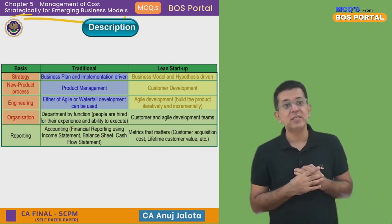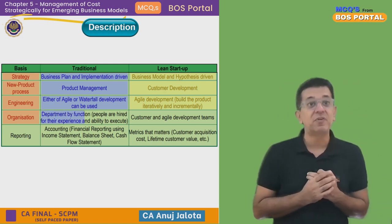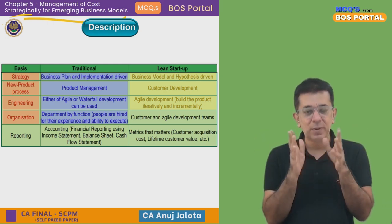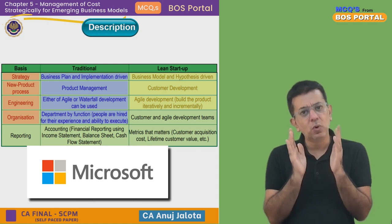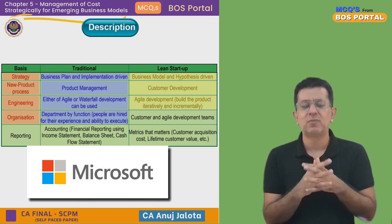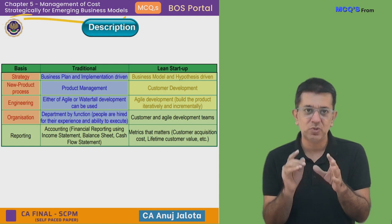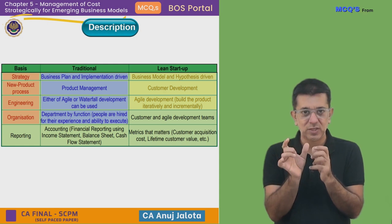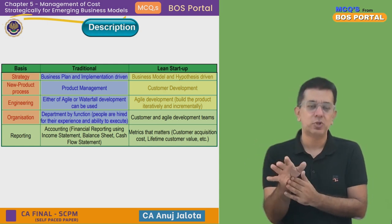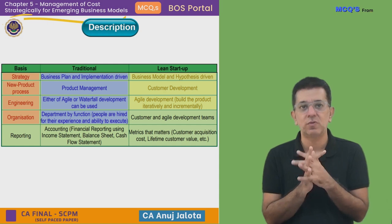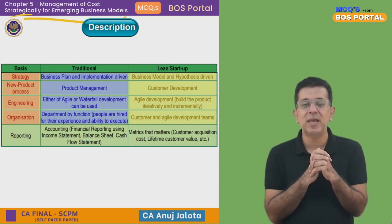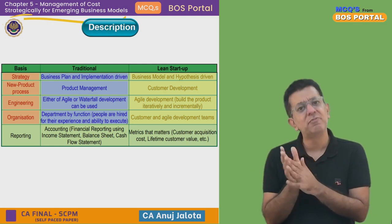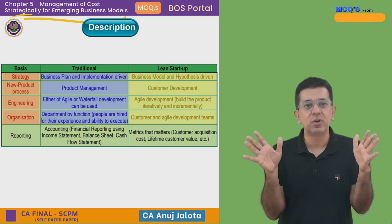For organization structure, traditional companies are organized by department and function — people are hired for their experience and ability to execute a specific role. In Microsoft, for example, a tech person only handles tech; you can't ask them about sales. That specialization is their strength. Lean startups, by contrast, use customer-driven and agile development teams where a person may have more than one role.